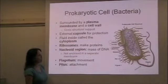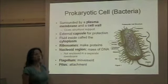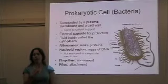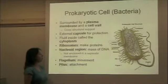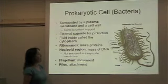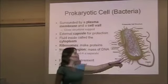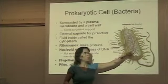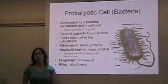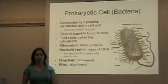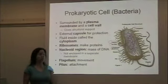The fluid inside of the plasma membrane is called the cytoplasm. It's sort of a watery, gel-like material. And floating throughout that cytoplasm are these little green dots, which are called ribosomes. These aren't organelles, but they're really important structures. The purpose of the ribosome is to create proteins.